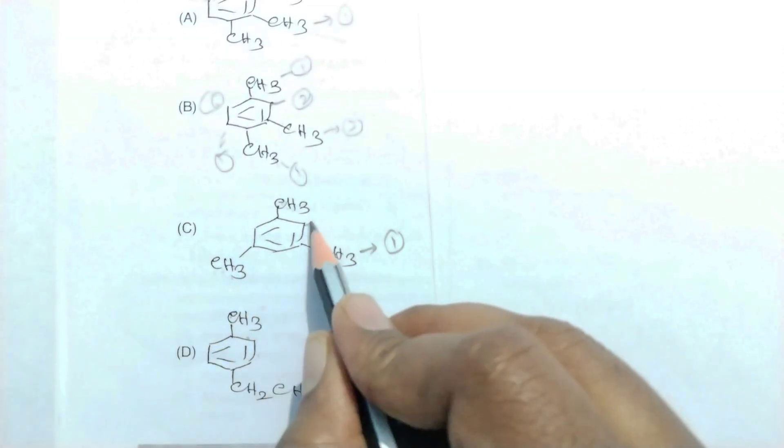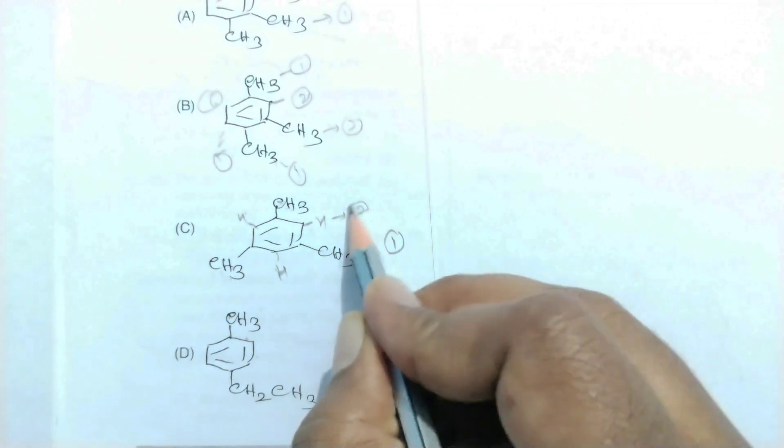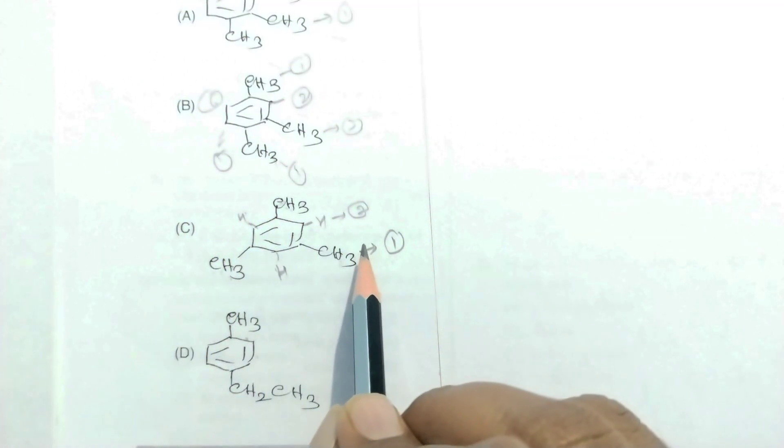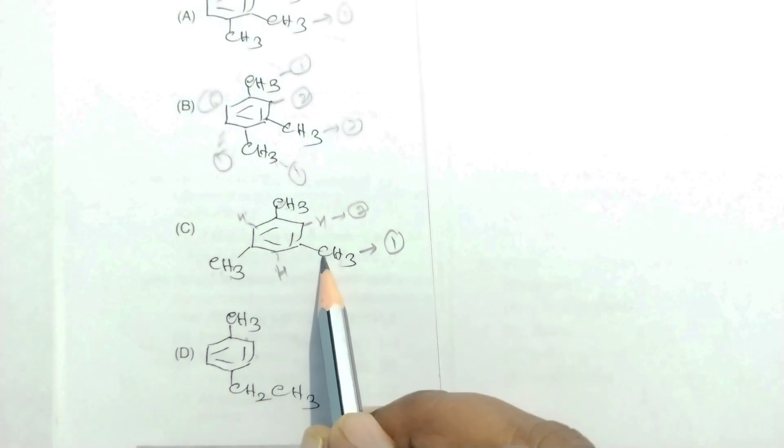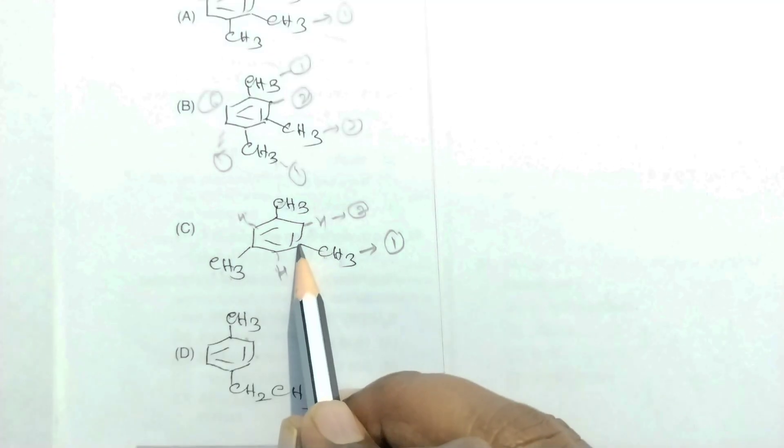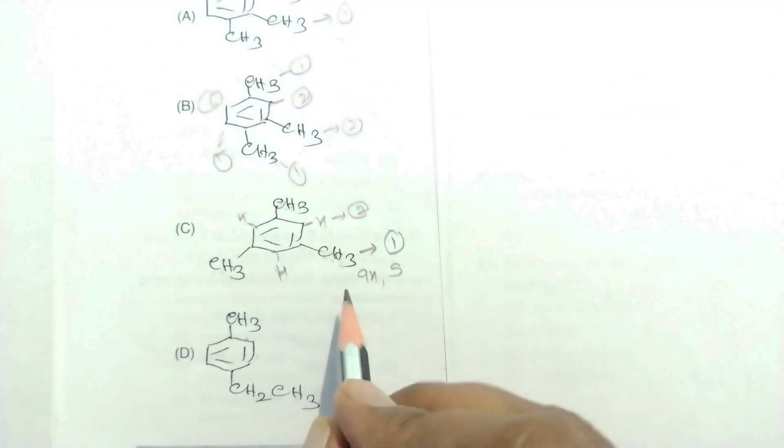All those CH3 hydrogens give only one signal. The CH hydrogens are also chemically equivalent, giving the second signal. So for compound C, you get only two signals. Checking the splitting: the CH3 is attached to a carbon with no hydrogens, so by the n+1 rule it is 0+1 = 1, which is a singlet.